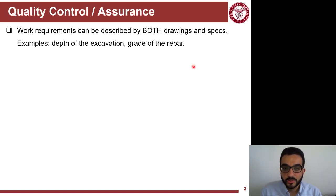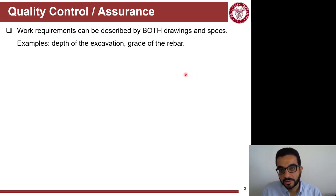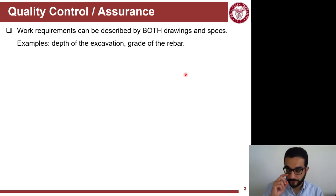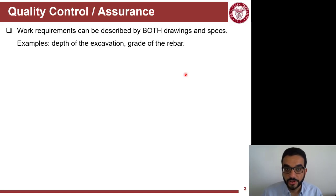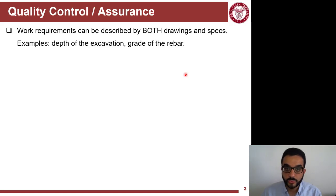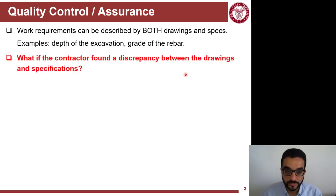We learned in the previous video about quality control and quality assurance as part of quality management. We know that work requirements — which quality is about fulfilling — can be described in both the specifications or drawings. So they both kind of represent your quality documents.